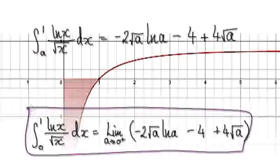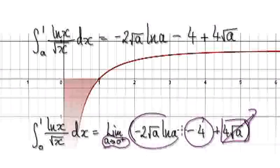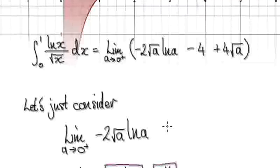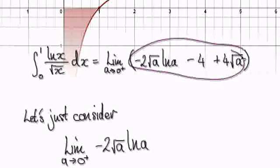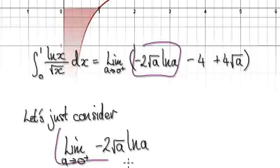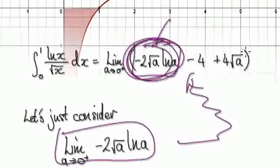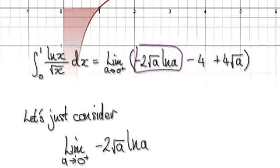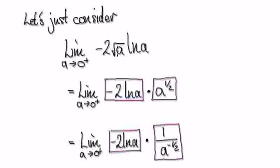Taking the limit as `a` tends to zero: this term here is going to be zero, this term will remain constant, but this term here is a bit hard to evaluate. So let's just consider that bit on its own for a moment. Once we've worked it out we can come back and look at the whole thing.